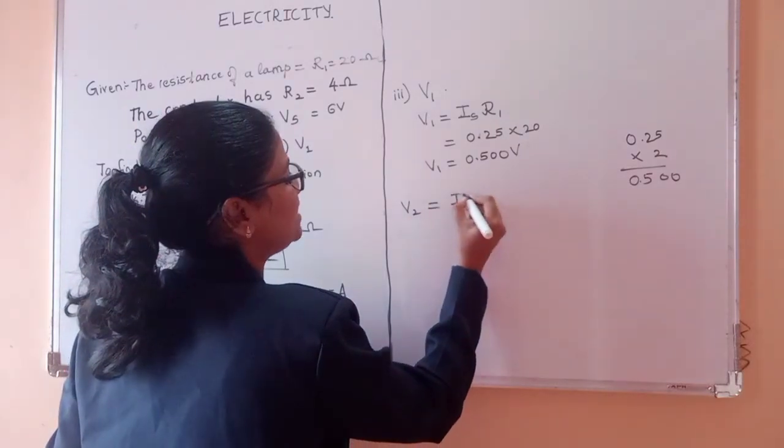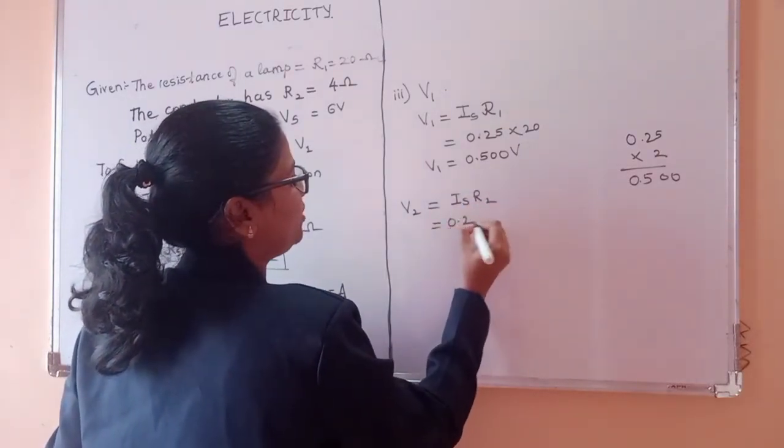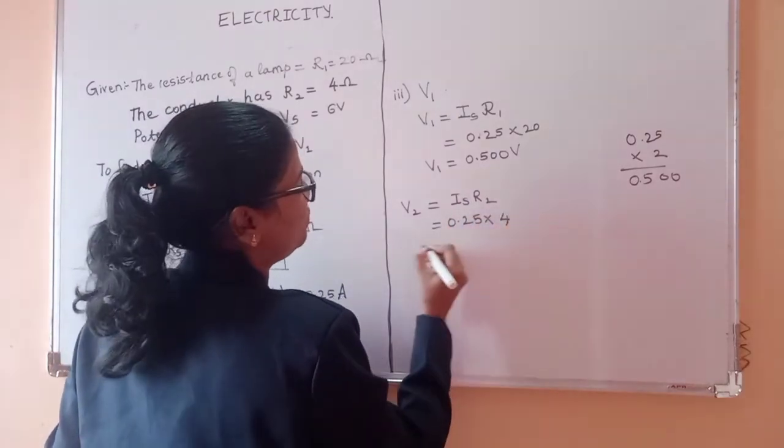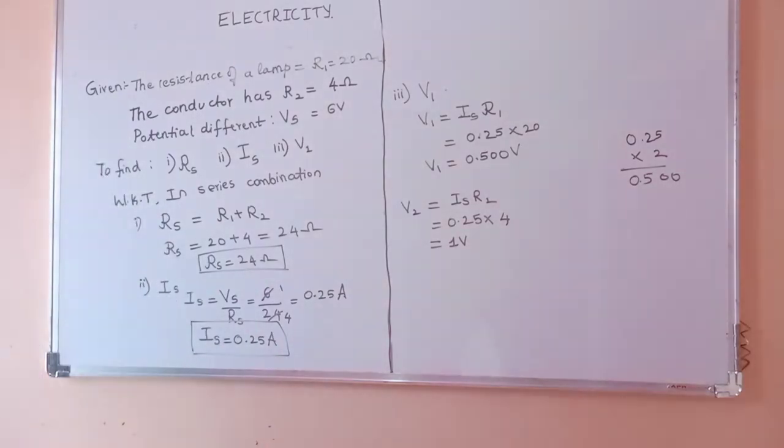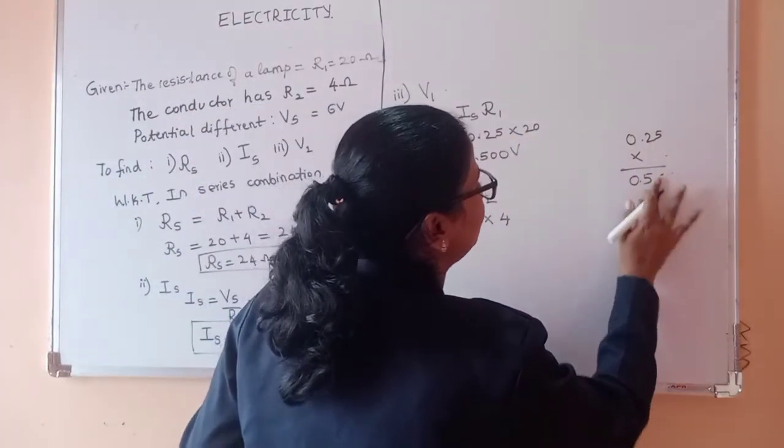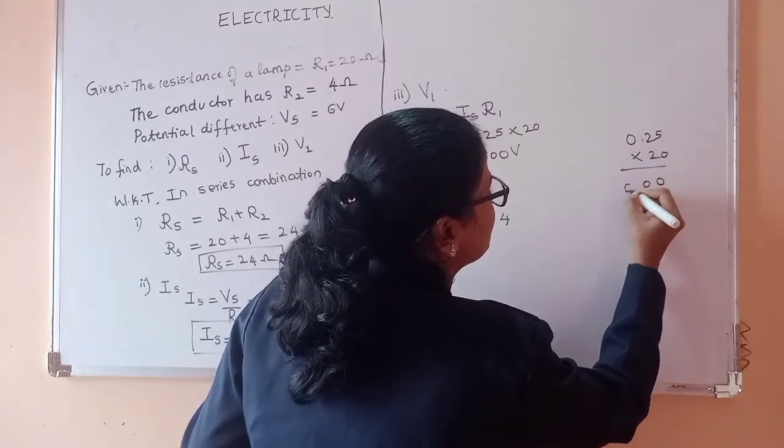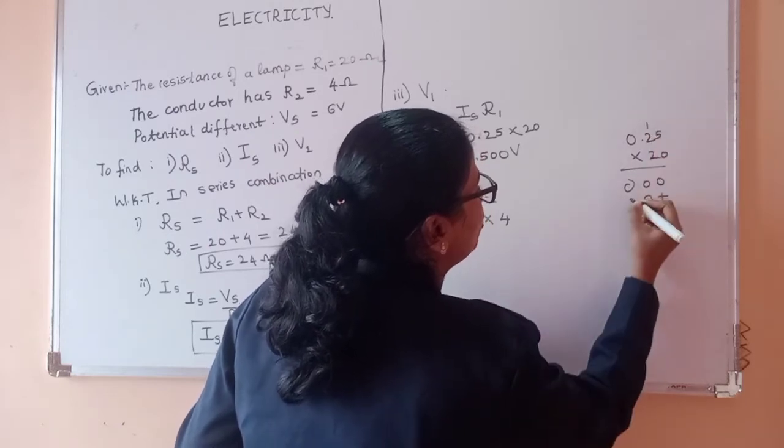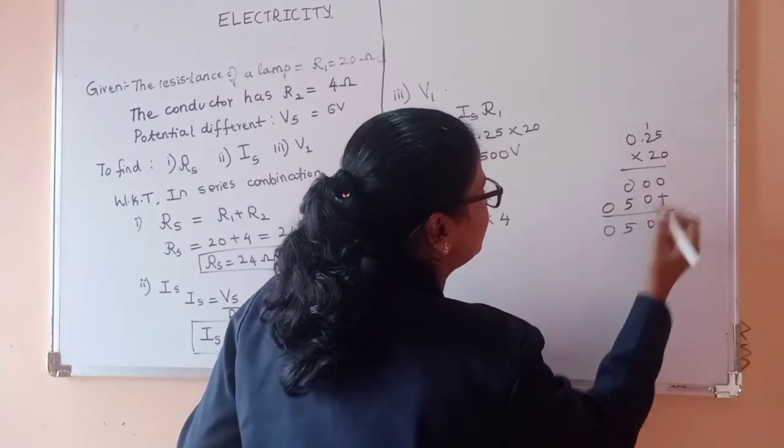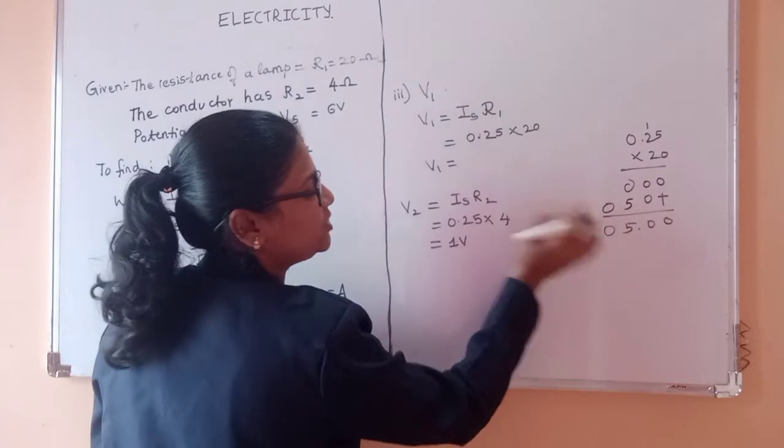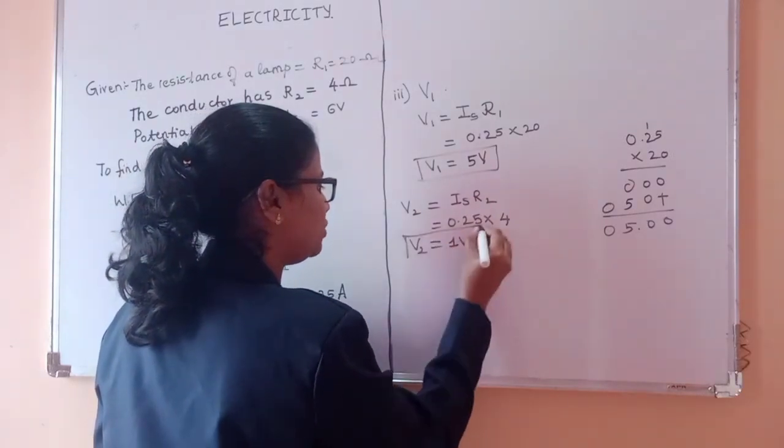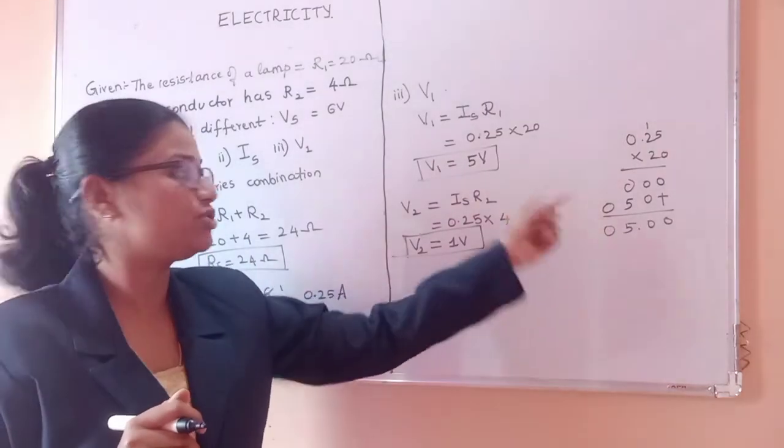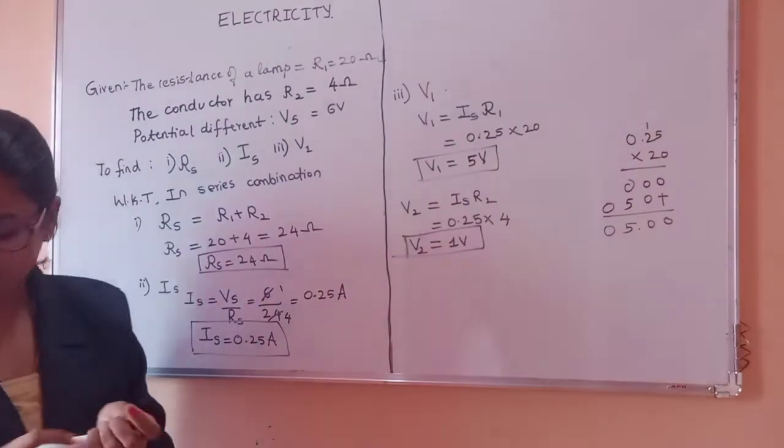V2 if you want to find, so Is into R2. What is Is? 0.25. What is R2 here? It is 4. So when you calculate it will come around 1 volt. Now when you multiply 25 into 20 - see here, first one is 0, then plus, 2 fives are 10, 2 twos are 4 and 5, 2 zeros are 0. After 2 decimal 5.00. So it is not 0.5, it is 5.00 means 5 volt. So you will get it as 5 volt, V2 as 1 volt.